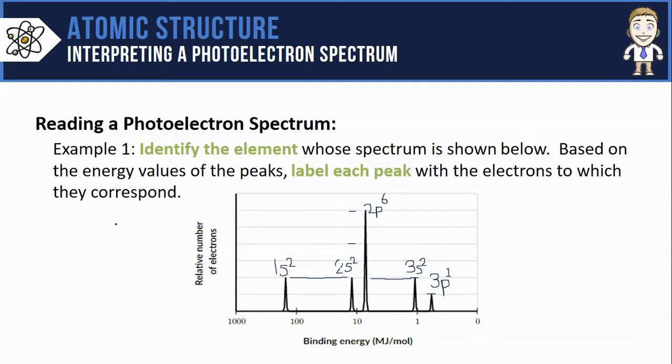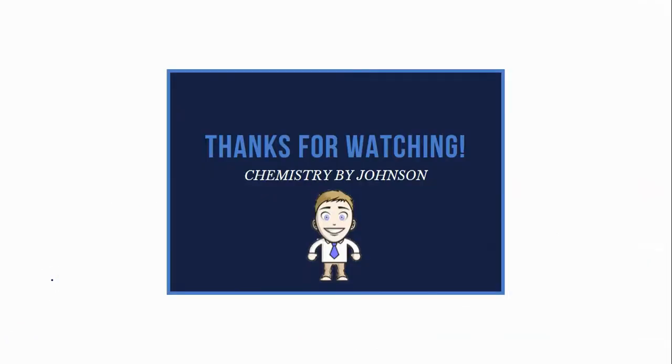If you count these up, it suggests that with 13 total electrons, we're looking at the photoelectron spectrum for aluminum. And that wraps it up for this video on interpreting a photoelectron spectrum. Thanks for watching, and here's a brief summary.